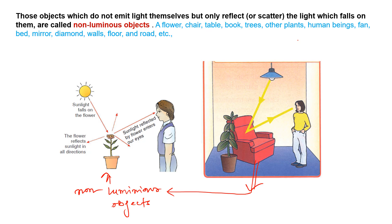For example, if you enter a room with no light you can't see anything, but when you switch on the light bulb, light rays from the luminous source reflect off all the objects and reach your eye. So flowers, chairs, tables, books, trees, planets, and human beings are all non-luminous objects — they don't have their own light, and only scatter light falling on them.